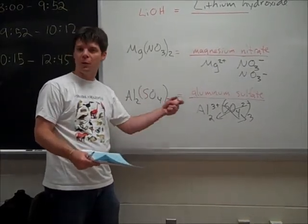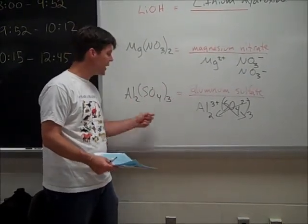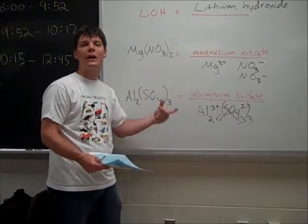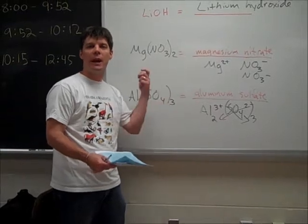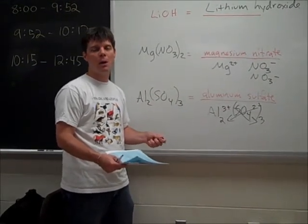Again, Al2, Al plus three, Al plus three, that's positive six. SO4, SO4, SO4, each one has a charge of minus two. So that gives me a negative six. Put them together, we have a charge of zero. We have a neutral compound.